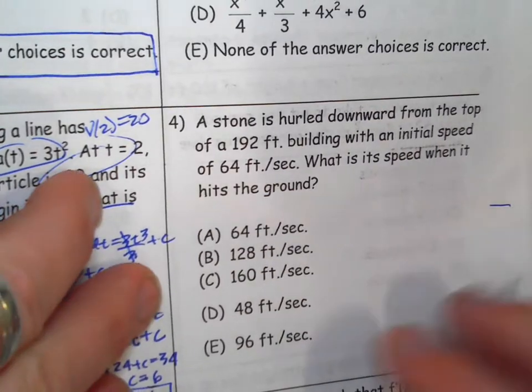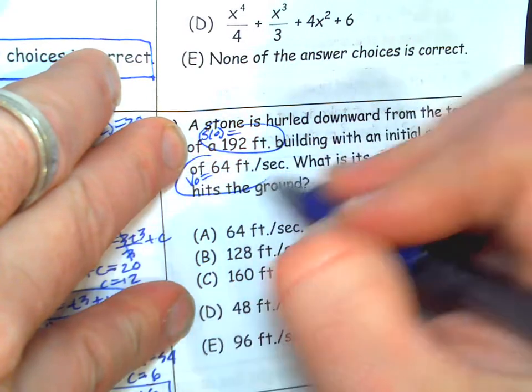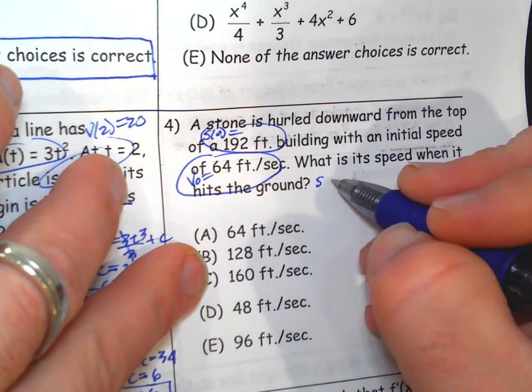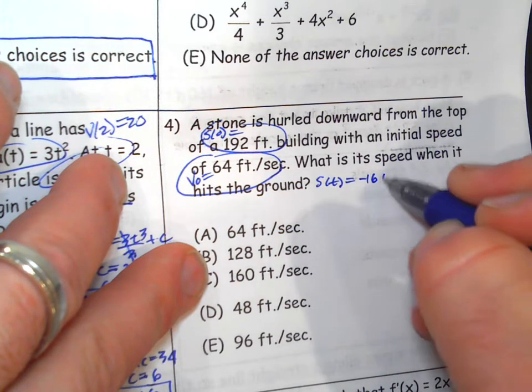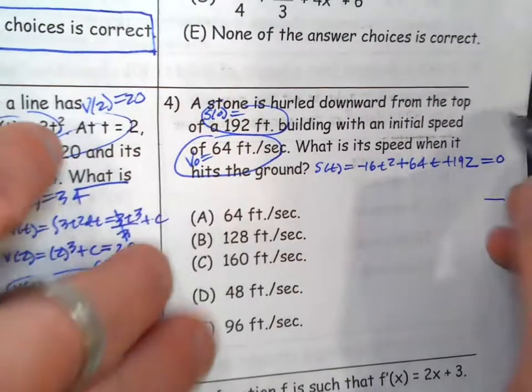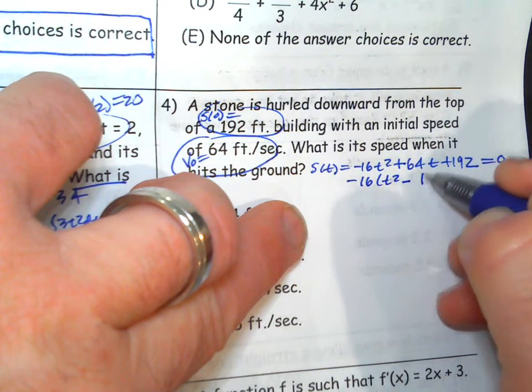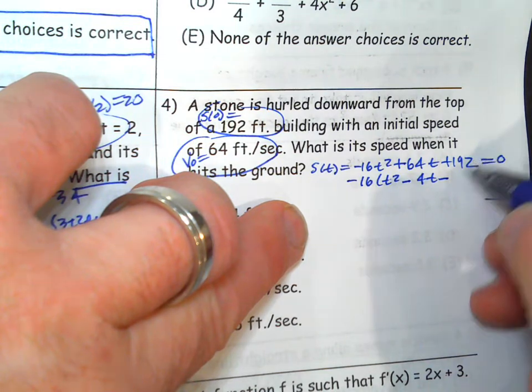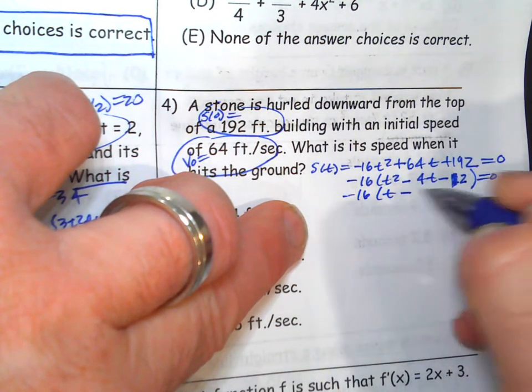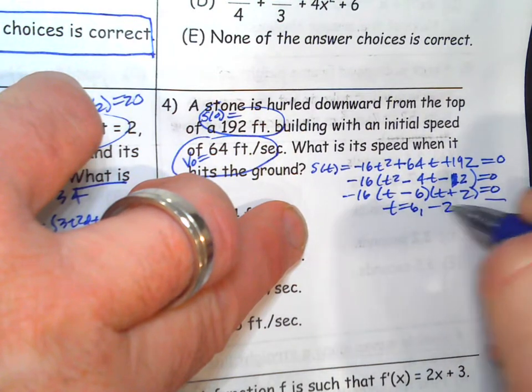Alright, number 4. Stone is rolled upward from the top of a 192-foot building, so that's your S naught. For the initial speed, that's your V naught. What is the speed when it hits the ground? Well, I guess we need to come up with the equation. It's gravity. S(t) equals negative 16t squared plus V naught t plus S naught. And we've got to figure out when it hits the ground first. Okay, so we're going to factor negative 16 out. That would be 22 or 12, t minus 6t plus 2.